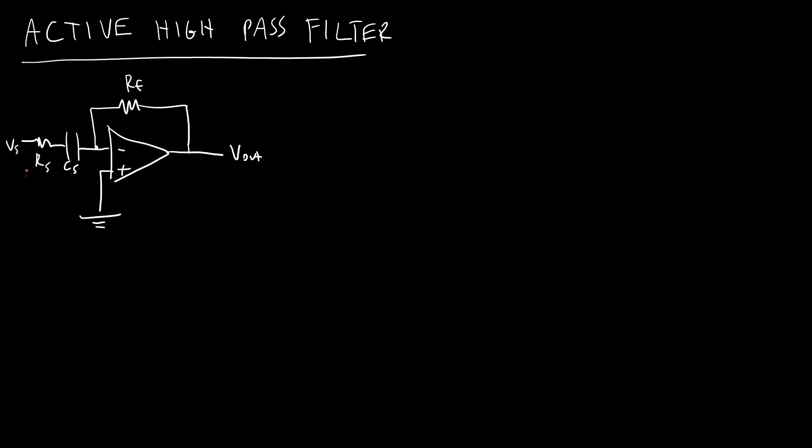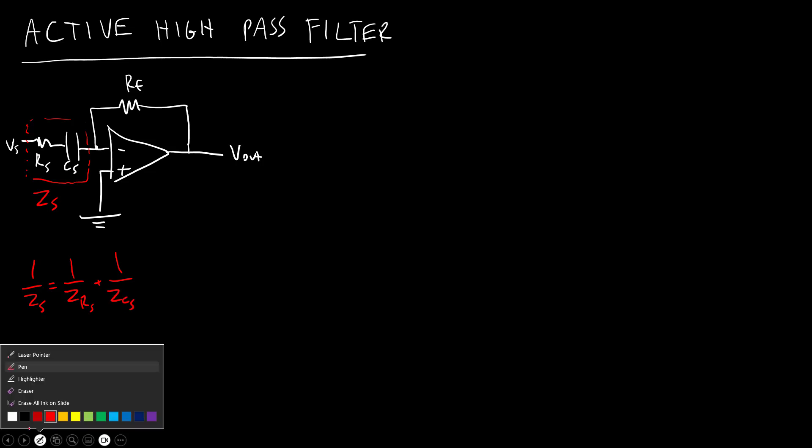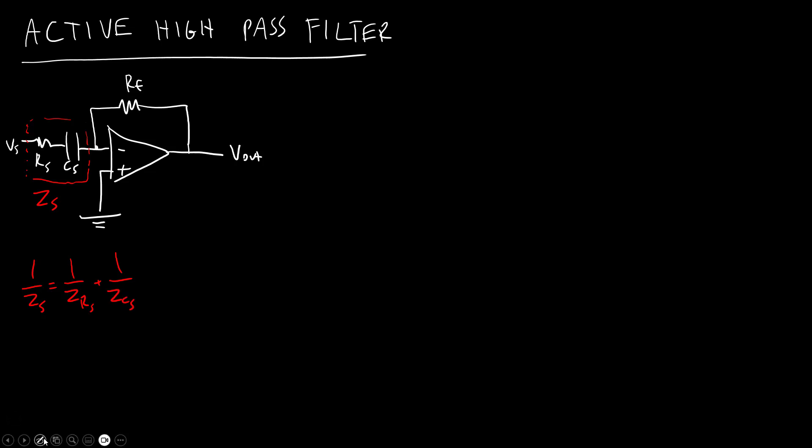So if we lump those impedances, we're going to have a single source impedance, ZS, where 1 over ZS is going to be equal to 1 over ZRS plus 1 over ZCS. We're going to have our feedback impedance, ZF, which is just going to be equal to RF.